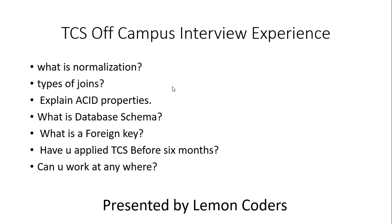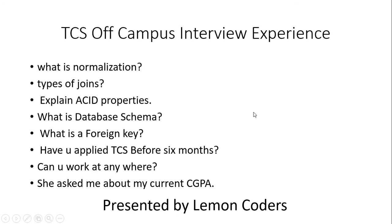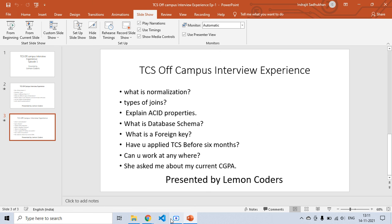Then they asked: can you work anywhere — meaning, are you ready to relocate? You should always say yes to this question. Then they asked what is your current CGPA, which was the last question of the interview. You have to answer your CGPA honestly. That was the end of this interview experience. If this video is helpful, please like it and subscribe to my channel Lemon Coders for more such interview experiences.